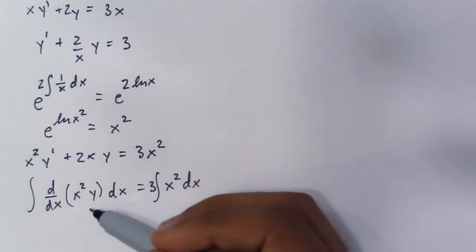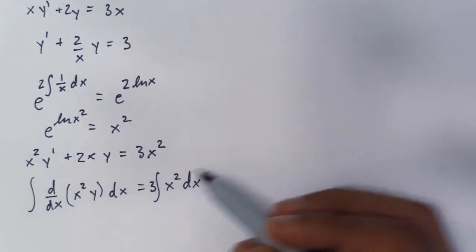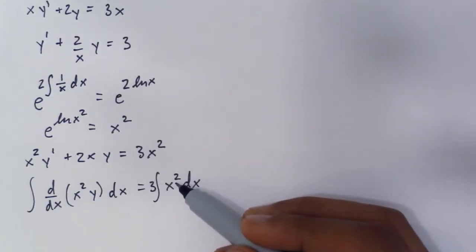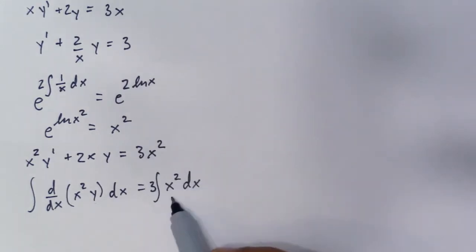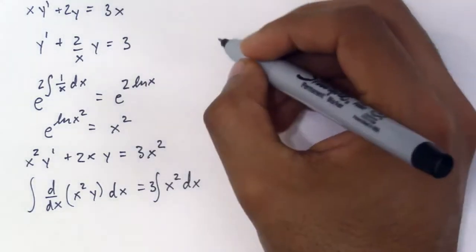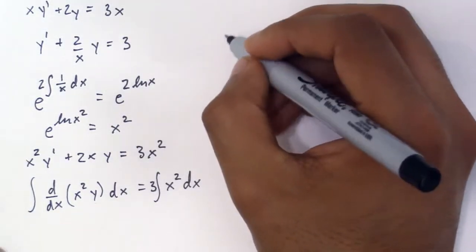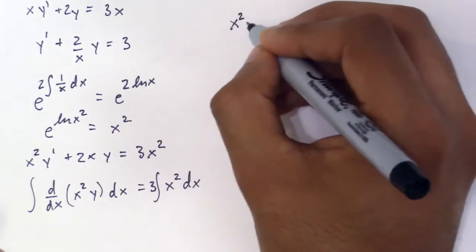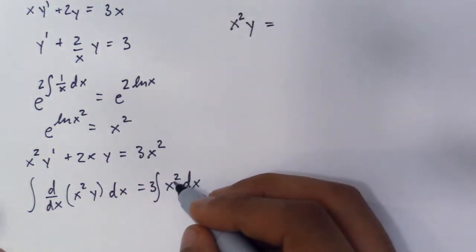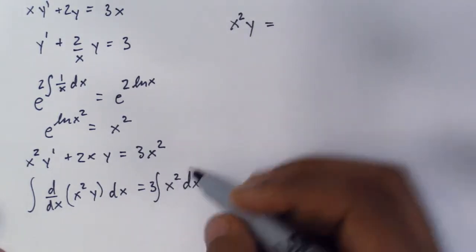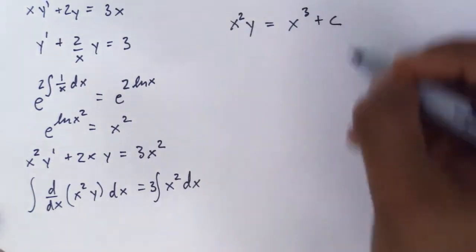An integral of a derivative is just simply itself. And as we know our rules of exponents or power rules or the inverse power rules, we add 1 and divide by the new exponent. So I'm going to do that up here. So this simply becomes x squared times y equals, you divide by the new exponent, so you add 1 which is 3, divide by 3 that's 1, so it's x cubed plus c.